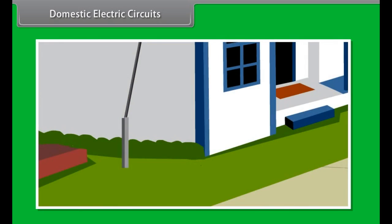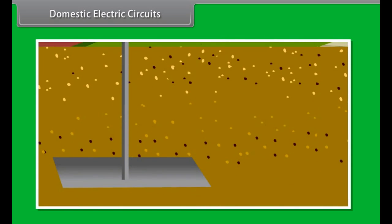The earth wire is connected to a metal plate deep into the earth to avoid receiving any severe shock in case of any leakage of current while using the appliances.